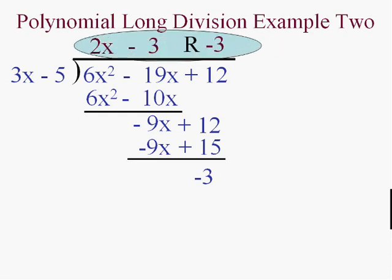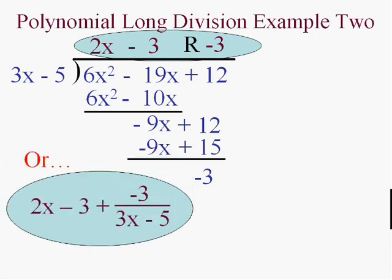What do I do with this negative 3? Well, it's the remainder. So the answer is 2x minus 3 remainder minus 3. Or you could write 2x minus 3 as you did before plus or minus 3 over 3x minus 5. That's another way of writing the answer. Got the idea? So these problems can certainly have remainders. They don't all come out even.